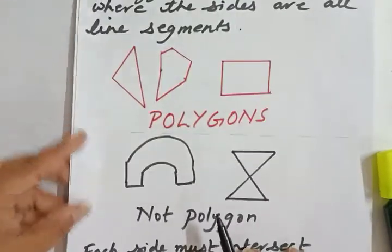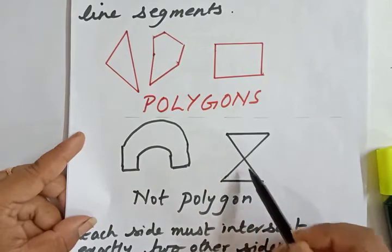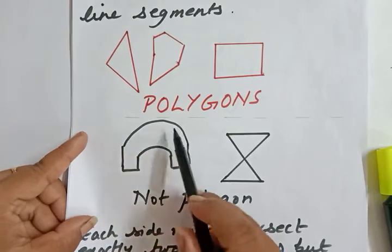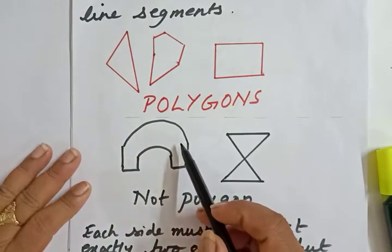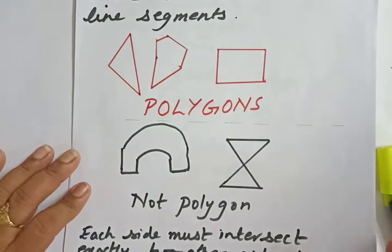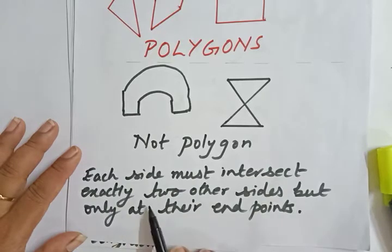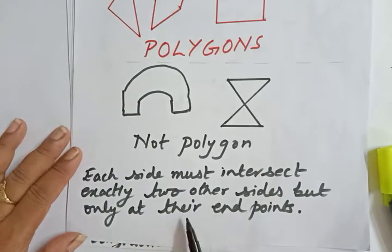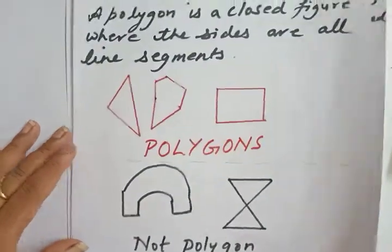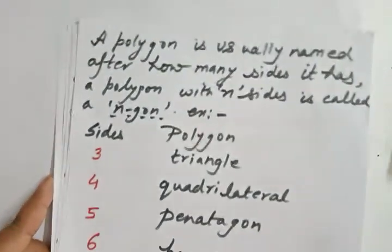Consider examples: a closed figure with a curve is not a polygon even if it's closed, because a polygon cannot have curves. Also, in a polygon, each side must intersect exactly two other sides but only at their end points - the lines should not intersect at other points. So I hope what a polygon is is very clear to you.